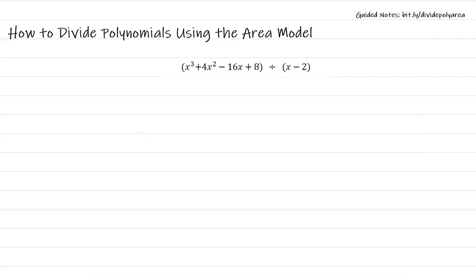I'm going to use the area model to divide these polynomials. To start I'm drawing a rectangle. My divisor has two terms, an x and a minus 2. So I'm going to divide this rectangle into two parts, letting this represent x and this representing a negative 2.